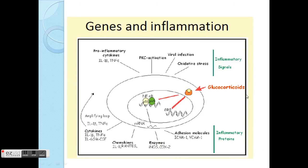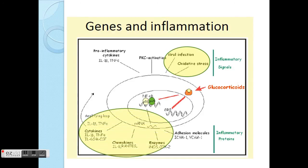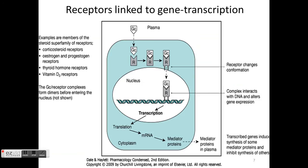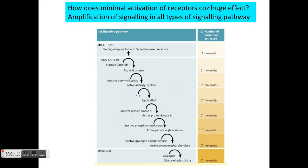Another example of steroids is glucocorticoids, which are also used as drugs. Inflammatory signals can come from viral stress, oxidative stress, cytokines, chemokines, and so on. This is a brief description of how these receptors are linked to gene transcription.